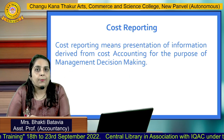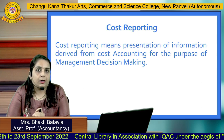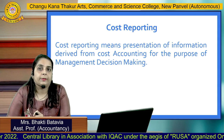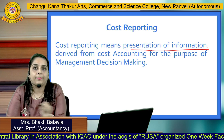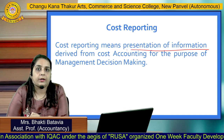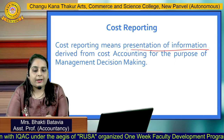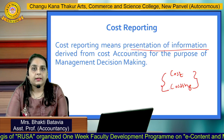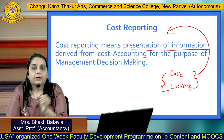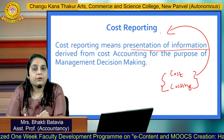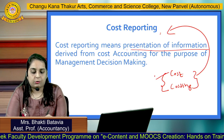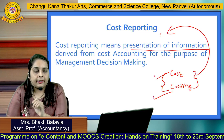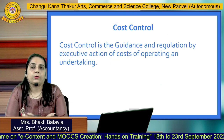After Costing, the next step is Cost Reporting. Cost Reporting means the presentation of information derived from cost accounting for the purpose of management decision making. When we calculate the cost and follow the costing process, the entire outcome goes into cost reporting. So to do reporting, we must first calculate the cost and follow the costing process.